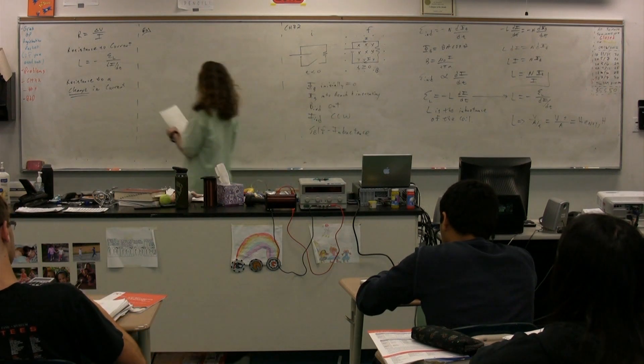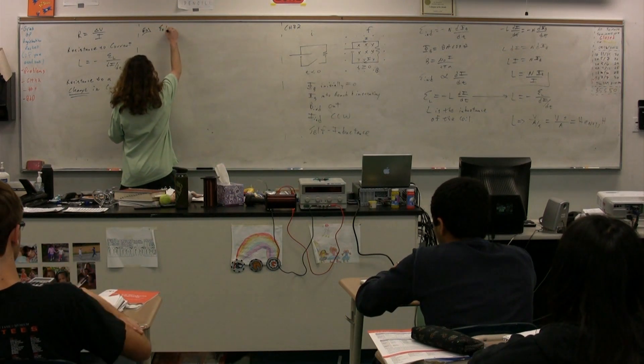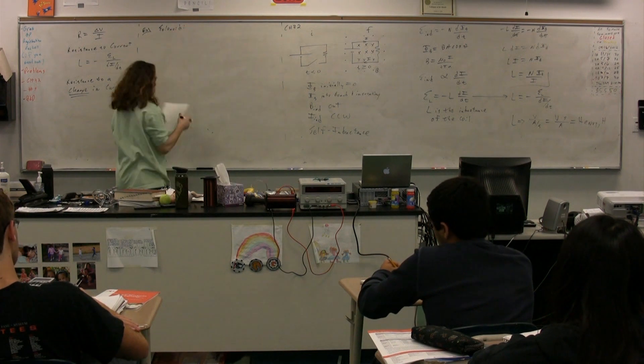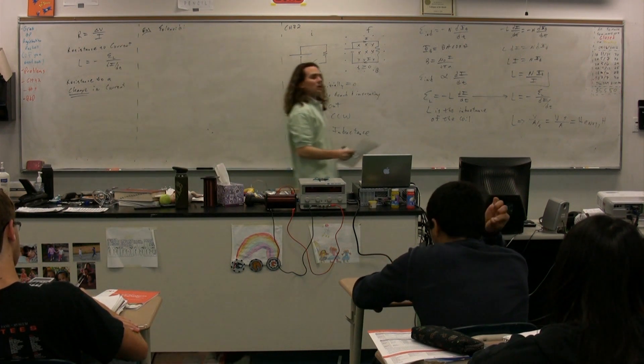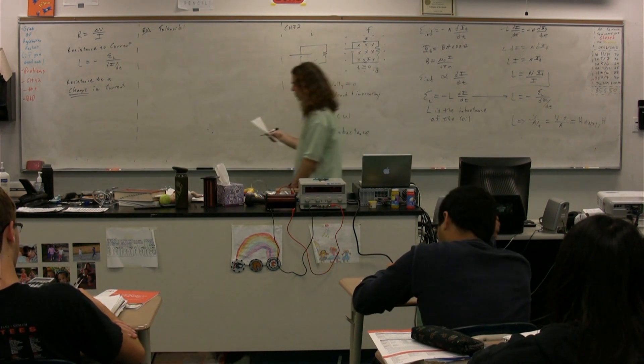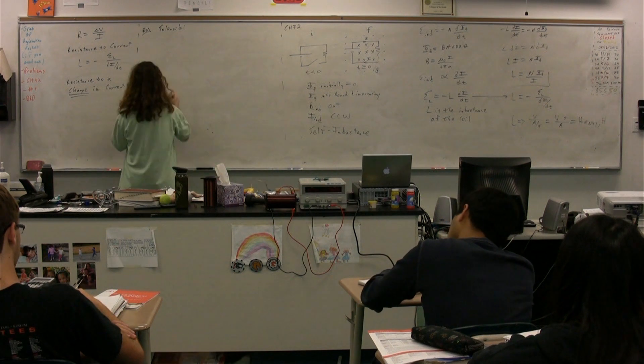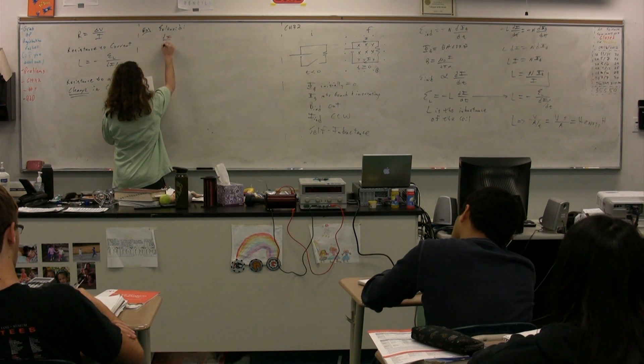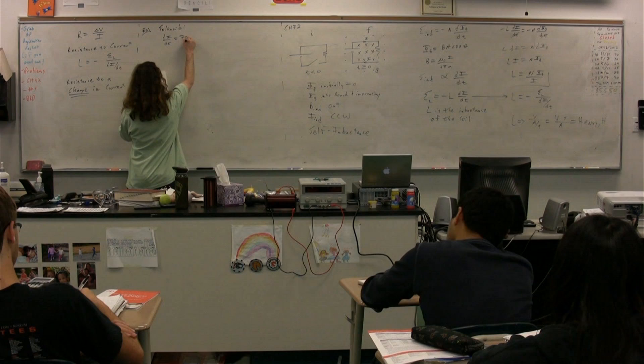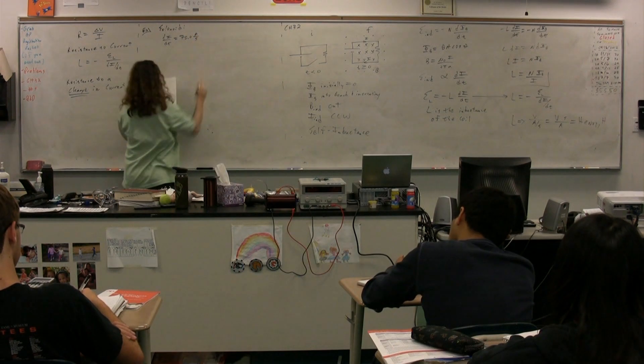Let's say we have a solenoid. In that solenoid, we know the current is changing at 75.0 amps per second.